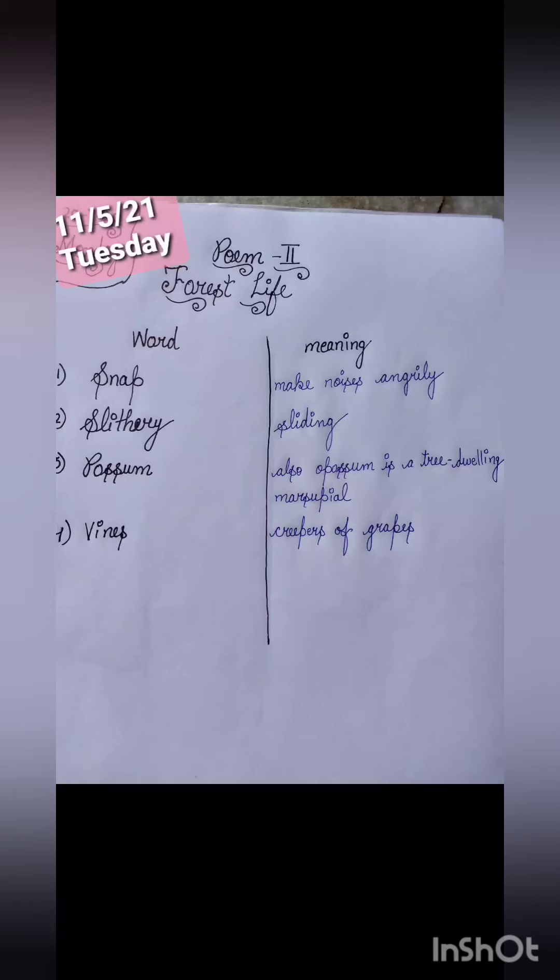Make a line in the center. On the left side write 'word' and on the right side write 'meaning'. First word is snap - meaning is make noises angrily. Second is slithery - means sliding, moving very smoothly. Next word is possum - possum is also called opossum in some areas, the real meaning is a tree dwelling marsupial. Next word is vines - vines are creepers of grapes.